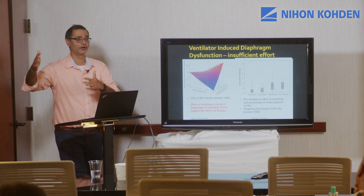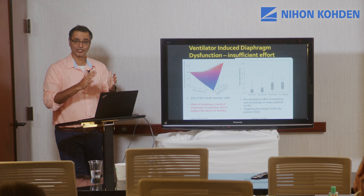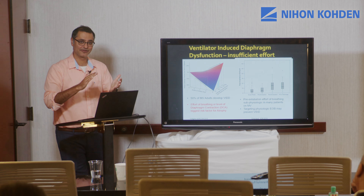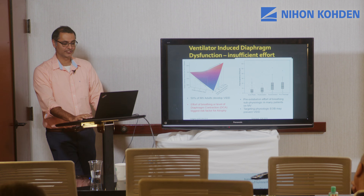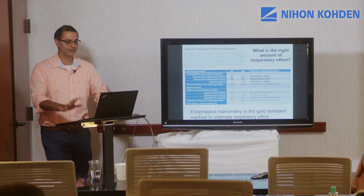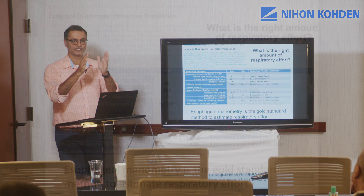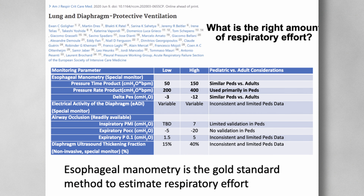Is transpulmonary pressure helpful for PEEP management? There seems to be a signal that titrating PEEP to achieve transpulmonary pressure of zero to +2 cmH₂O may have benefit and could help individualize PEEP titration rather than using a generic empiric high-PEEP approach — given the heterogeneity of treatment effect. However, this is very dependent on balloon calibration.